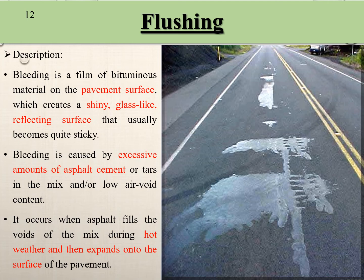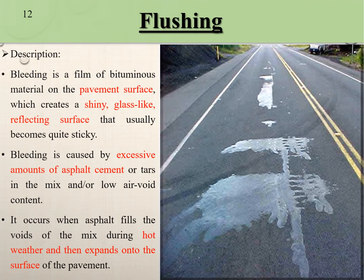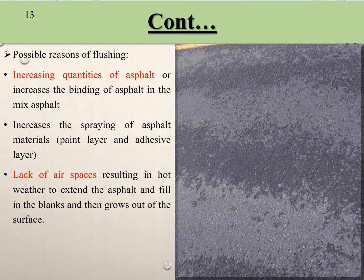Flushing — here we can see in a photograph there are three locations where flushing exists. A shiny material, like glass, reflects the rays. If we find this type of problem, it is called flushing. It is mainly caused by an excessive amount of asphalt content, occurring when asphalt fills the voids of the mix during hot weather and then expands onto the surface of a road. The main possible causes are lack of air voids and excessive asphalt quantity.